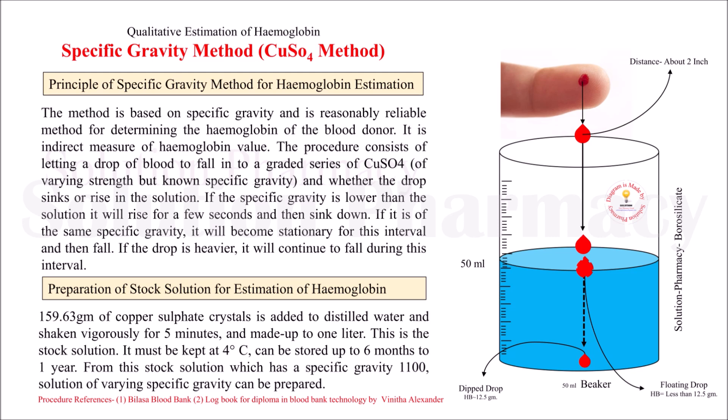This specific gravity method is not a quantitative method — it does not exactly estimate the exact amount of hemoglobin present in the blood. It is a qualitative method, used to estimate the hemoglobin of donor blood to determine whether we will accept blood from a donor or not.